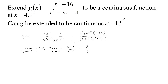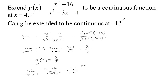So we just need to extend this function so that g of four will be eight fifths. But we can't remove the discontinuity at negative one, because the limit as x tends to negative one of g of x would be the limit as x tends to negative one of x plus four over x plus one, which doesn't exist — because the top is getting close to three and the bottom is going to zero, so you're getting tinier and tinier positive or negative numbers, so on one side it goes to positive infinity and the other goes to negative infinity.